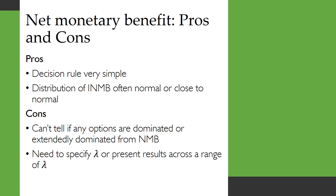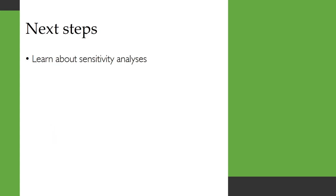Here are some pros and cons of net monetary benefit. The decision rule is now very simple: you just need to know which intervention has a positive incremental net monetary benefit, or — if you have more than two options — which has the highest net monetary benefit. The distribution of the INMB is often normal or close to normal, which helps for statistical purposes. Unfortunately, net monetary benefit doesn't tell you if any of the options are dominated or extendedly dominated. And you do need to pre-specify lambda or present results across a range of lambda values. Your next steps will be to learn about sensitivity analyses in the coming weeks.